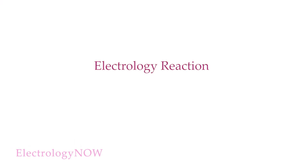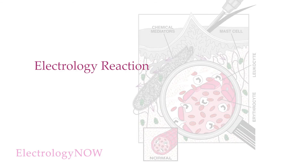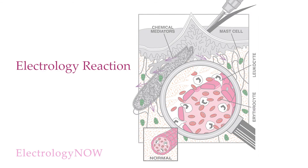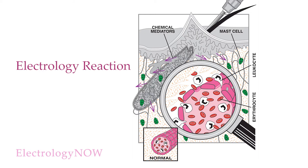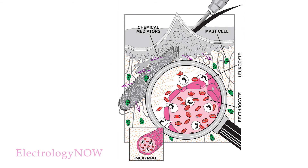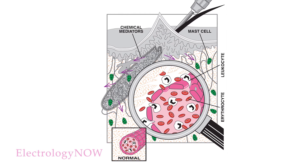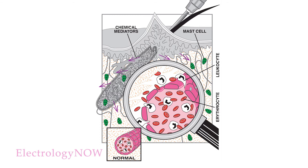This first reaction from the electrology wound takes place within seconds. In this drawing, you have just treated a follicle. The injured skin cells instantly send chemical messages to the mast cells — those little green guys. The mast cells then degranulate and flood the skin with all kinds of chemical mediators. Histamine quickly reacts on the surrounding blood vessels.